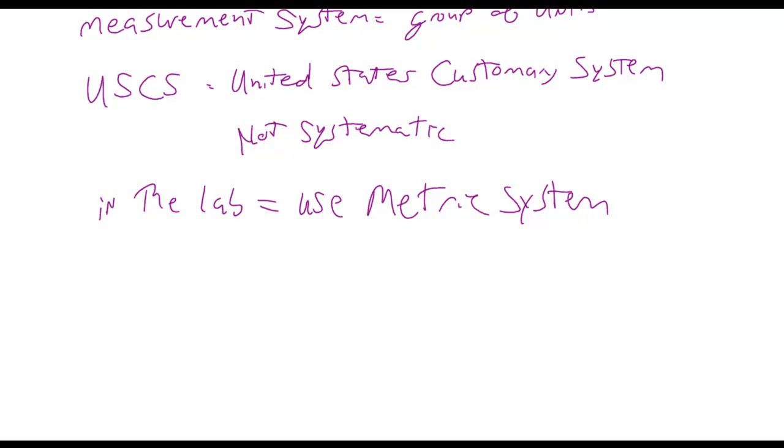Now, just as the United States customary system had its terminology or USCS, the metric system falls under a measurement system. The measurement system that the metrics fall under is called SI, for system international, the units. You can tell I don't normally speak French, but we just call it the SI system. And so for the international system of units.